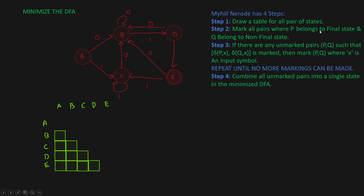Step two is to mark all the pairs where P belongs to a final state and Q belongs to a non-final state. For pair BA, both A and B are non-final states, so you don't mark it. Similarly for AC, BC, AD, BD, and CD — all of these are non-final states on both sides, so none of them get marked.